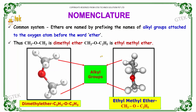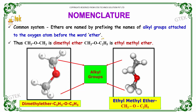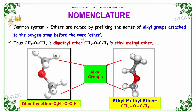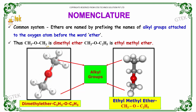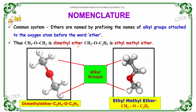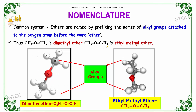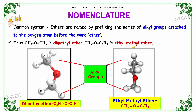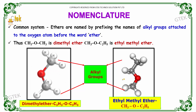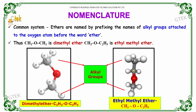Nomenclature of ethers — Common system: ethers are named by prefixing the names of the alkyl groups attached to the oxygen atom before the word 'ether'. Thus, CH3OCH3 is known as dimethyl ether, whereas CH3OCH2CH5 is known as ethyl-methyl ether. The following diagrams show examples of dimethyl ether and ethyl-methyl ether.